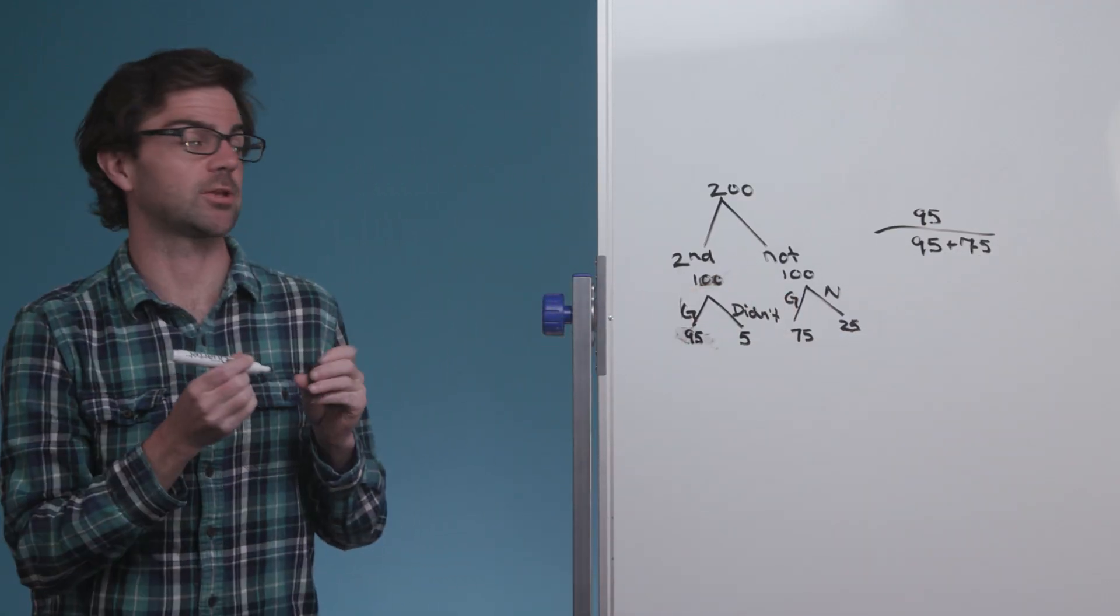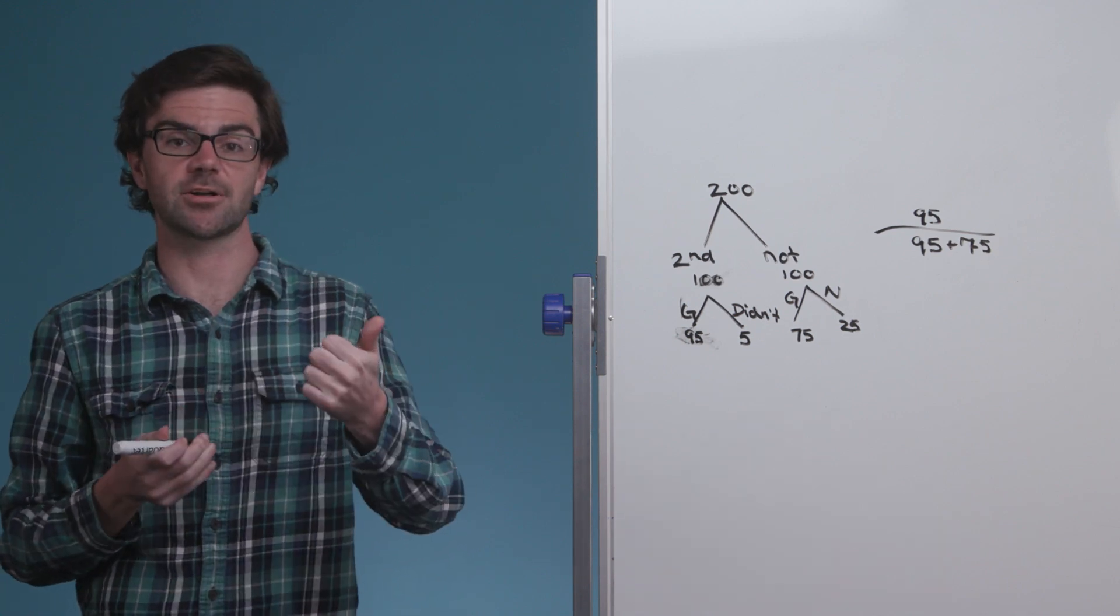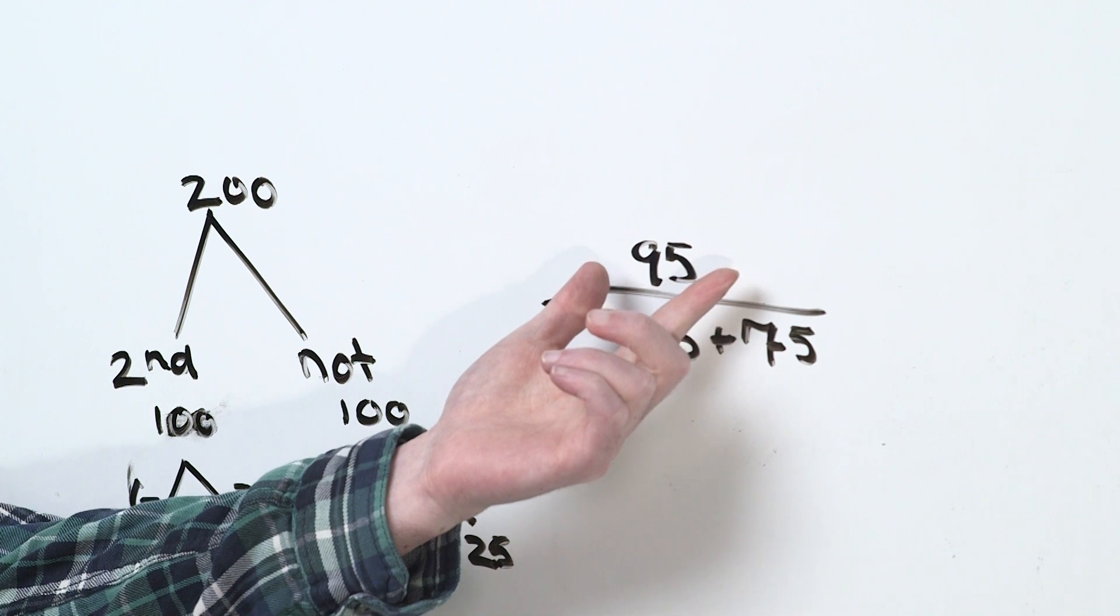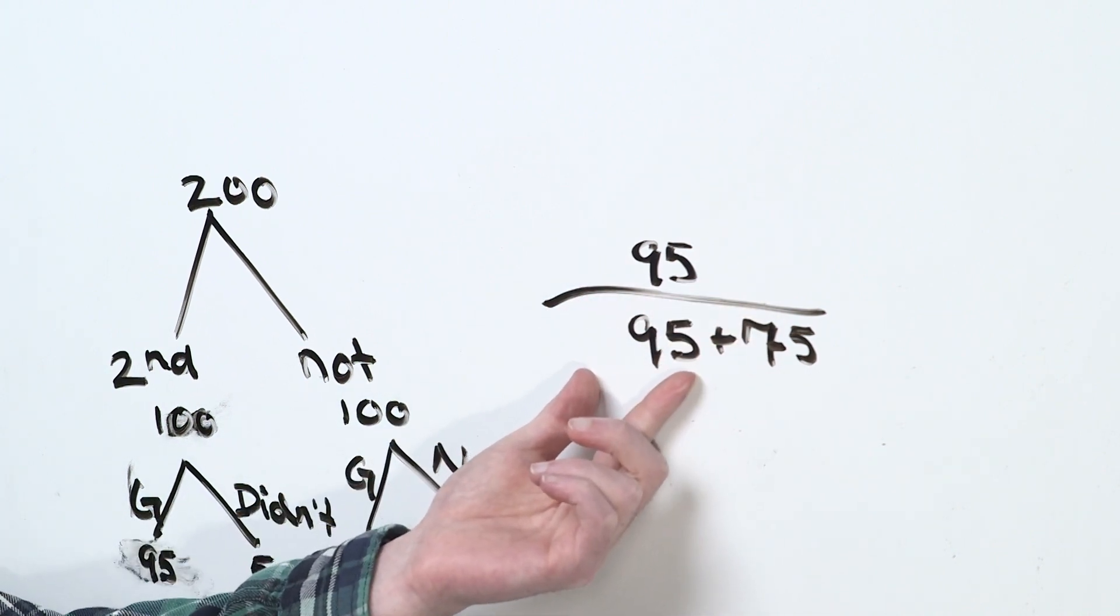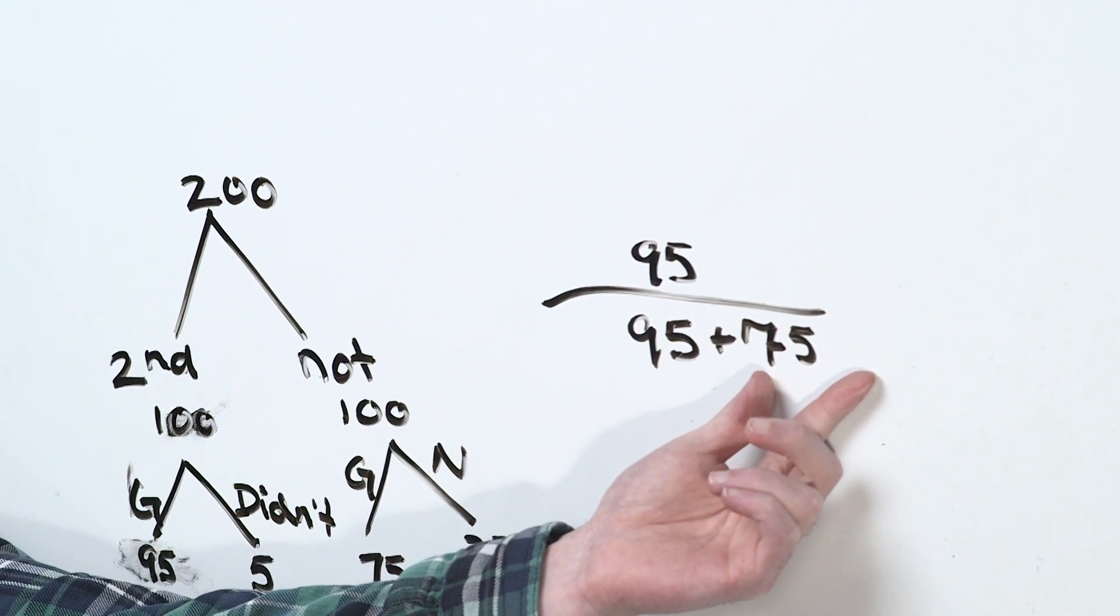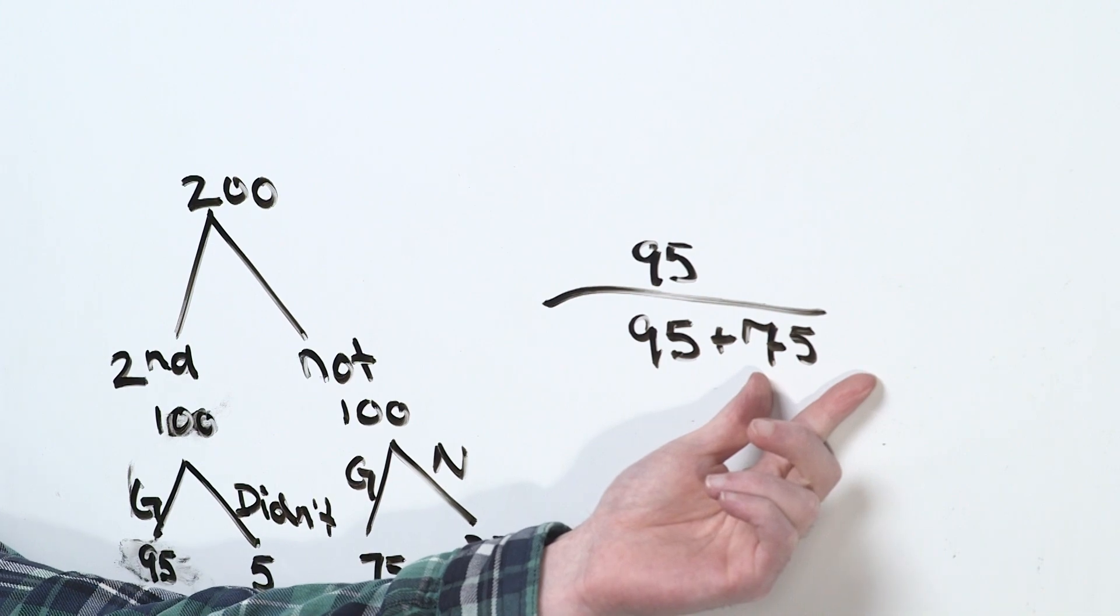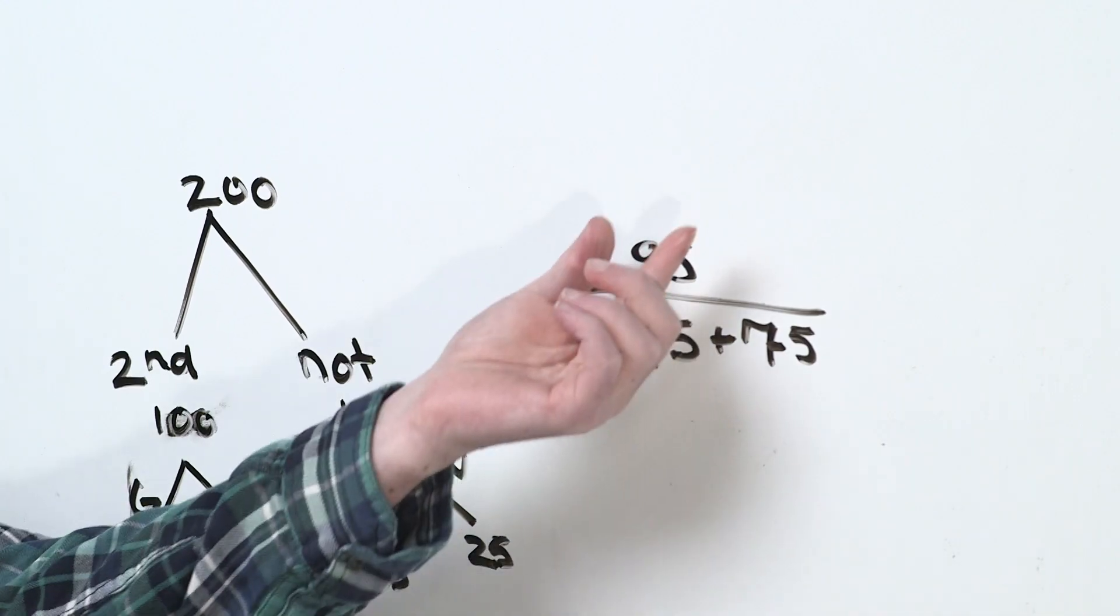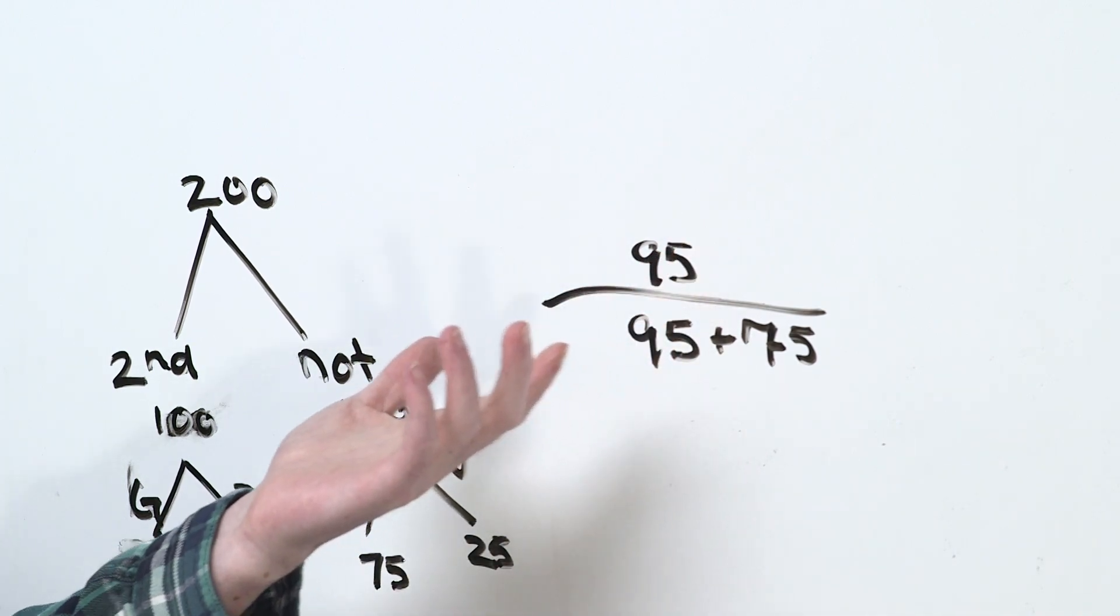And this is the probability that you get a second interview given that you felt good, right? This is you felt good and you received a second interview. This is you felt good but you didn't receive a second interview. So these are all the ways that you felt good, these are the ways that you felt good and you actually got that second interview.